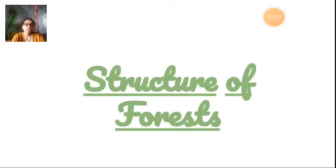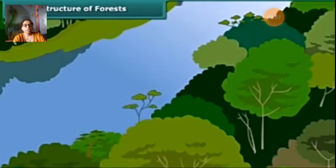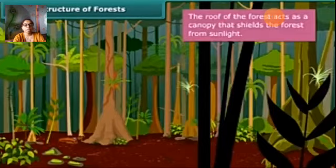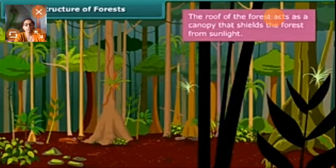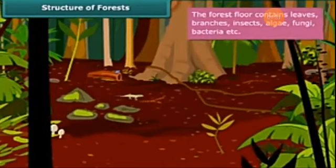Next is the structure of the forest. The upper part of trees and shrubs, including the branches, is known as the crown. The crown of the tall trees forms the roof of the forest. The roof of the forest acts as a canopy that shields the forest from sunlight. The forest floor is hot and humid. It contains leaves, branches, and insects.